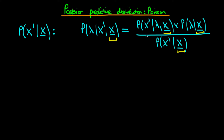What does this expression on the right-hand side actually mean? The first part of the numerator is our likelihood. What we assume is that if we know lambda, then x primed and this vector of observations x are conditionally independent. So we can remove any conditioning on the vector of observations, because the only thing connecting x primed with x is the parameter lambda. The second part is normally the prior in Bayes' rule, but here we have the probability of lambda given x — this is just our standard posterior obtained previously.